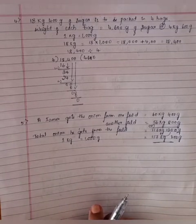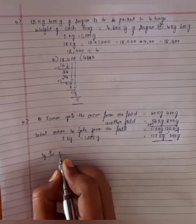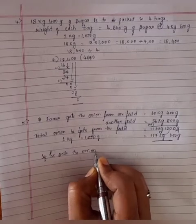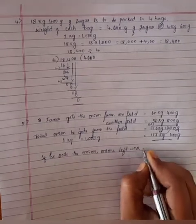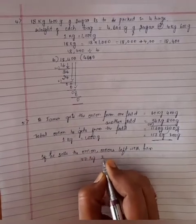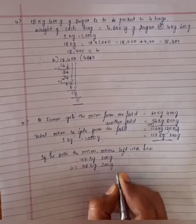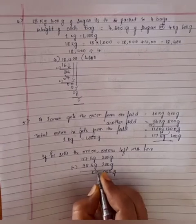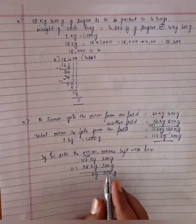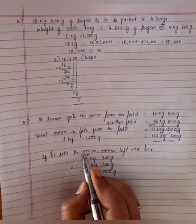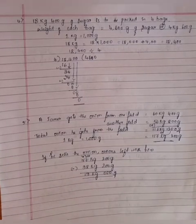If he sells 98kg 200g of onion, find the weight of onions left with him. Subtract 117kg 200g minus 98kg 200g. 0 minus 0 is 0. Is this possible? No. Take borrow, now it becomes 17. 17 minus 8 is 9. Here remaining is 10. 10 minus 9 is 1. Remaining onions left with him: 19kg 0g.